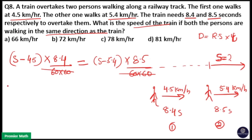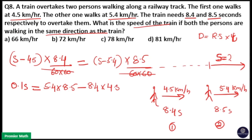After subtracting, 8.5S minus 8.4S equals 0.1S. This is equal to the cross terms: minus 5.4 into 8.5 comes here as 5.4 into 8.5, and minus 4.5 into 8.4 gives us 8.4 into 4.5. Multiplying both sides by 10, S equals 54 into 8.5 minus 45 into 8.4.